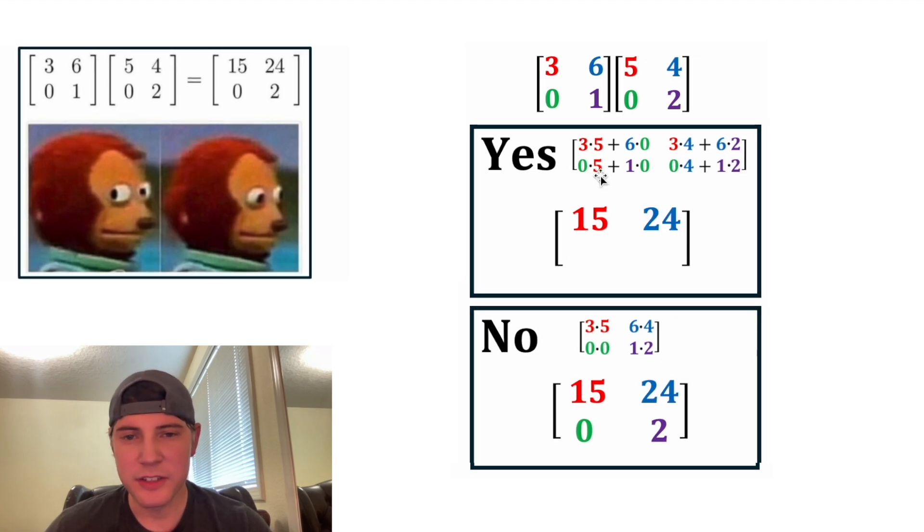And then 0 times 5 is 0 plus 1 times 0 is 0, so that's 0. And 0 times 4, that's 0, and then 1 times 2 is equal to 2.